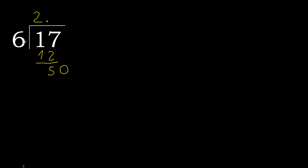6 multiplied by 9 is greater. 6 multiplied by 8 is 48. 48 is not greater. 50 minus 48 is 2.